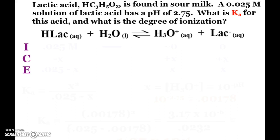So for example, here I have lactic acid that is found in sour milk, but other places as well. Obviously, you might have heard when we exercise, muscles produce lactic acid. But if I have a 0.025 molar solution of lactic acid, it has a pH of 2.75. What I would like to know is what is the Ka for this acid? And what's the degree of ionization?